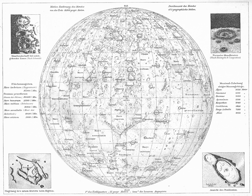Names for all planetary features include a descriptor term, with the exception of two feature types. For craters, the descriptor term is implicit. Some features named on Io and Triton do not carry a descriptor term because they are ephemeral. In general, the naming convention for a feature type remains the same regardless of its size. Exceptions to this rule are valleys and craters on Mars and Venus, where naming conventions differ according to size.